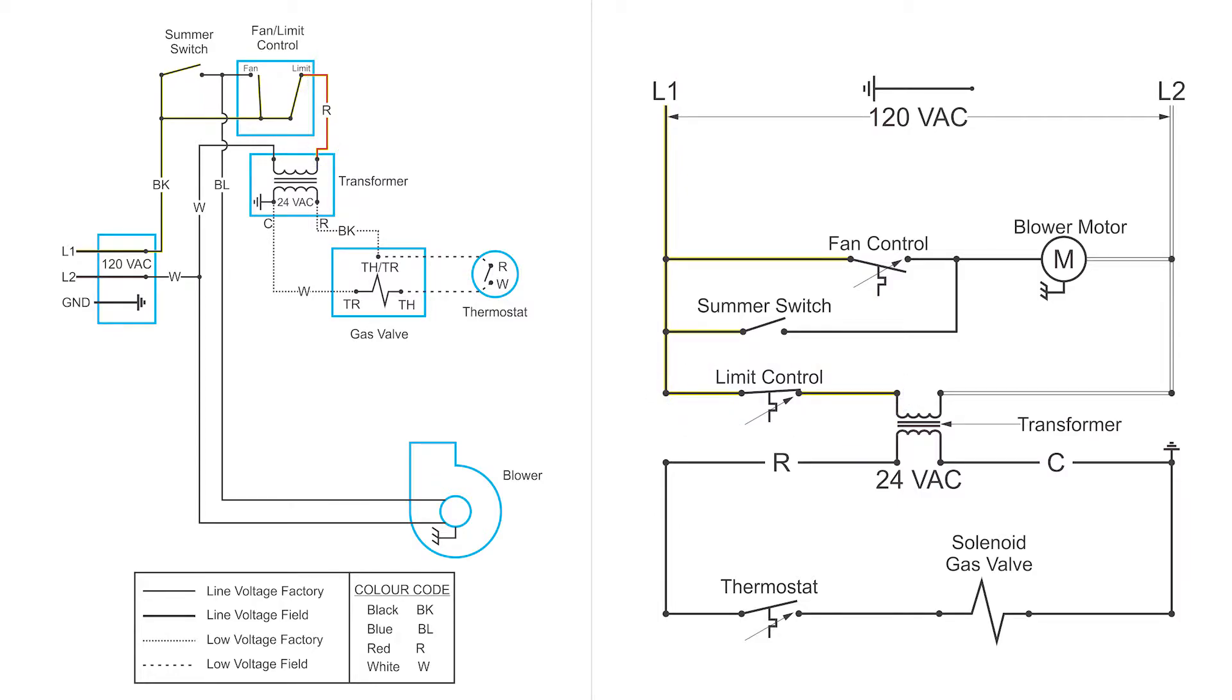Now this transformer takes 120 volts AC and knocks it down to 24 volts AC. And as plumbers we are allowed to work on the 24 volt system. Now we will note that from the transformer we have an R and a C. Those are the different designations for 24 volts.